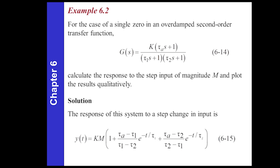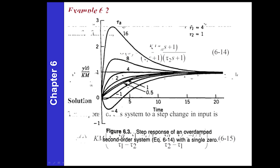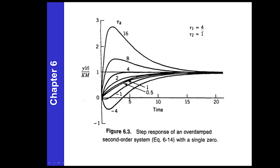I want to show this next plot. As you vary tau a — with tau one equal to 4 and tau two equal to 1, both stable poles — you vary the location of that zero. If you adjust tau a to be negative 4, you see an inverse response. As you get higher, for example tau a equals 16, you actually see some overshoot before it comes back to steady state. This plot shows the influence of tau a on the system.